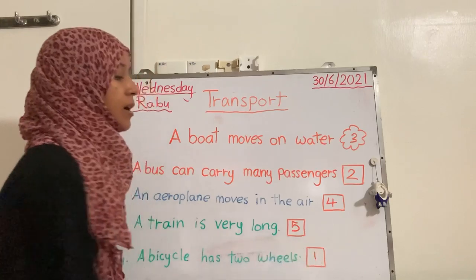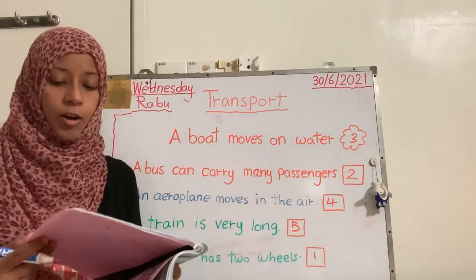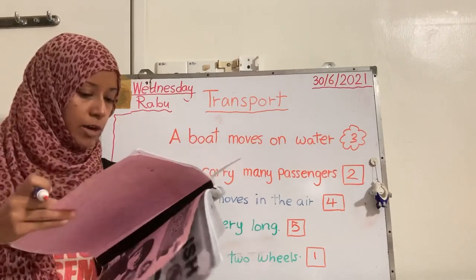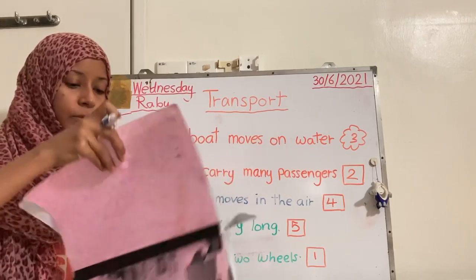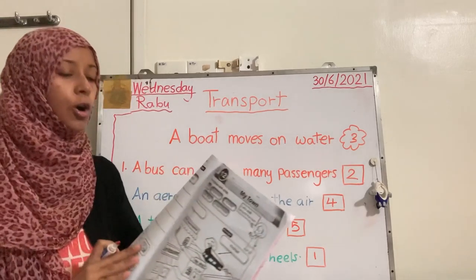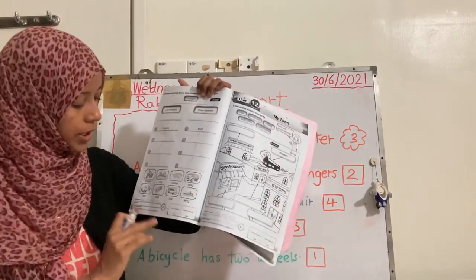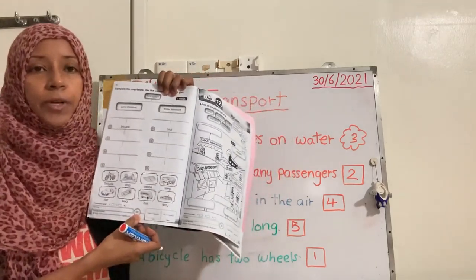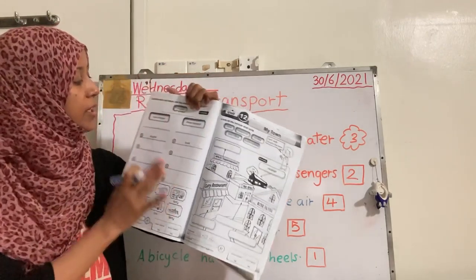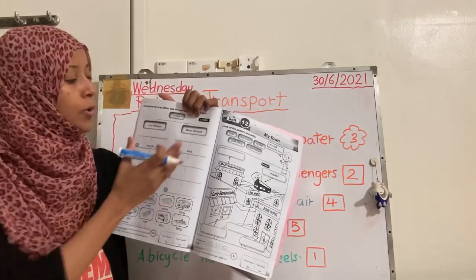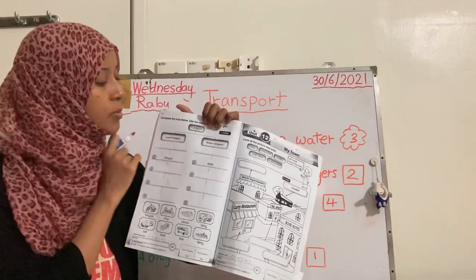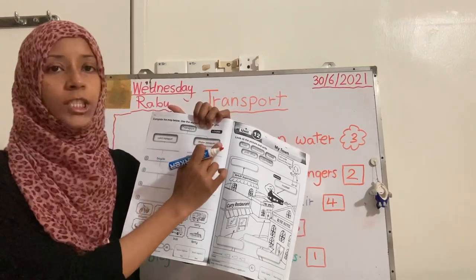Those are the different types for that exercise. After this, you need to do your homework. Your homework for today will be page number 50. In page 50, you need to do the transport section — you have land transport and water transport.